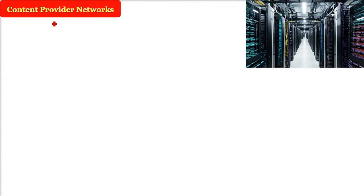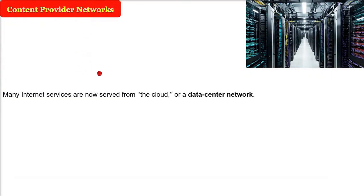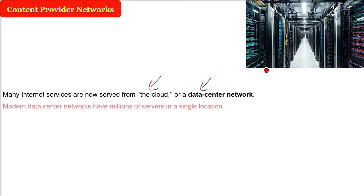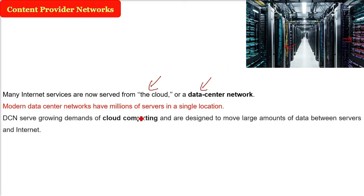Content provider networks — many of the internet services now are coming from or served from the cloud or the data center network. This is the picture of a data center network. There are thousands and even millions of servers in a single location, and this single location can go up to kilometers. I'm talking about DCN, data center network, because of the increasing demand of computing and cloud computing.